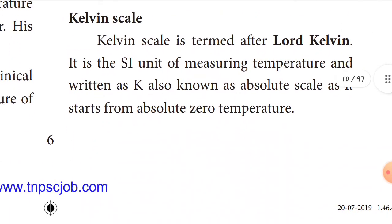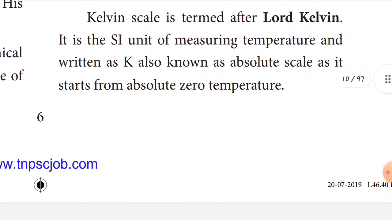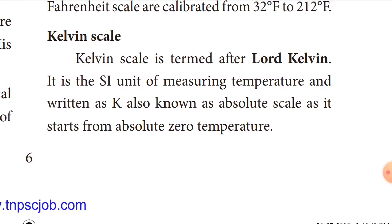The Kelvin scale is the SI unit of temperature. It is termed after Lord Kelvin, a scientist. It is written as capital K and is also known as the absolute scale. This Kelvin scale starts from absolute zero temperature — zero Kelvin — and goes upward. Absolute zero is the correct answer when asked about the starting point of the Kelvin scale.